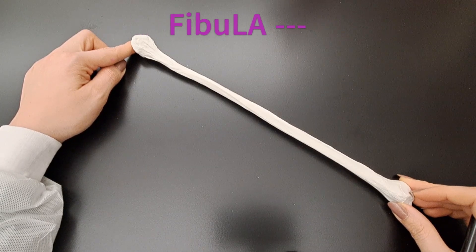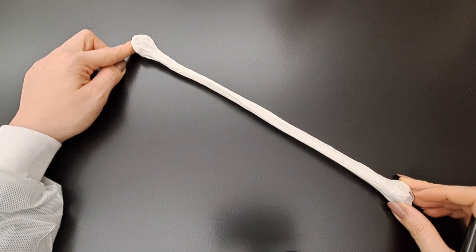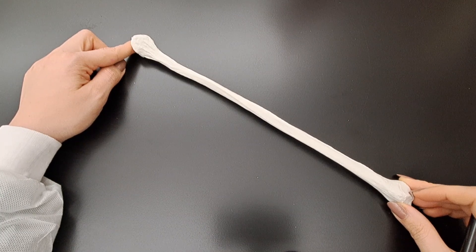So the fibula is the lateral bone. The tibia is the medial bone when the body is in the anatomical position.